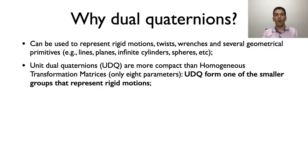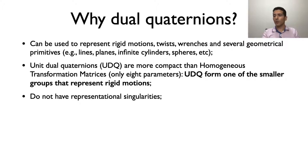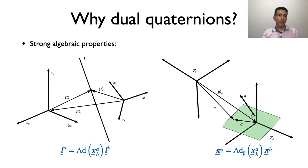Unit dual quaternions are more compact than homogeneous transformation matrices — they have only eight parameters — and form one of the smaller groups that represent rigid motions. Both represent the six-dimensional manifold of rigid motions, so both representations have constraints. A general dual quaternion has eight components, but unit dual quaternions have two constraints, so the underlying manifold has six dimensions, as expected. They do not have representational singularities, although this is not exclusive to unit dual quaternions, as homogeneous transformation matrices also do not have representational singularities. Nonetheless, dual quaternions have strong algebraic properties that are useful when transforming several primitives between different coordinate systems.